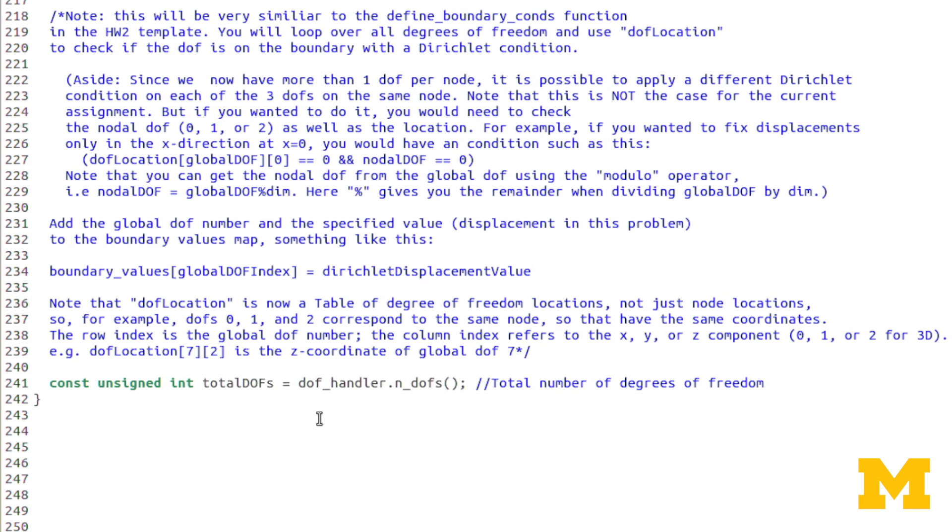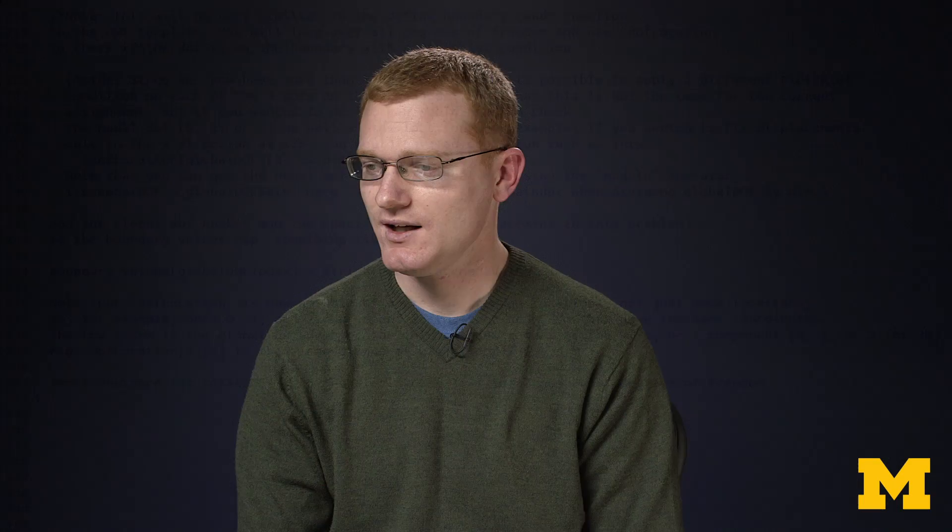For define boundary conditions, this is something you'll fill in yourself. It's very straightforward, similar to the previous assignments. A slight difference is that we're using DOF location instead of node location. Another element that gets introduced is the fact that you may have different Dirichlet boundaries for each degree of freedom. You may want to fix on a certain face the displacements in the x direction but not fix the displacements in the y or z direction. If that's the case, in your if statement you would check not only the location of the degree of freedom but also the corresponding nodal degree of freedom. Is that degree of freedom a displacement in the x, y, or z direction?